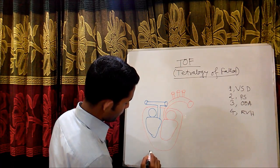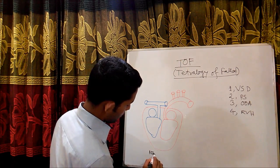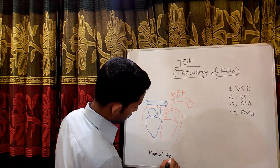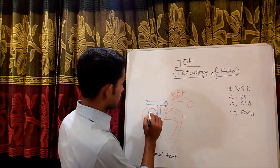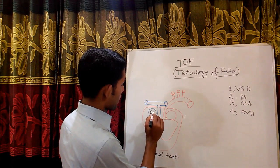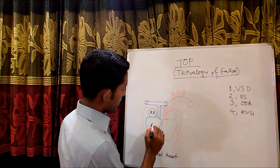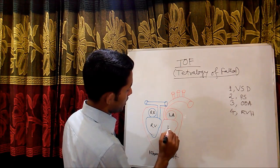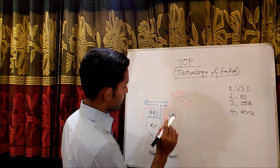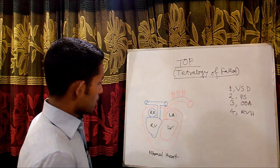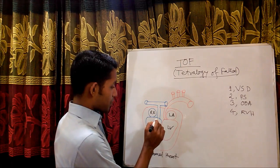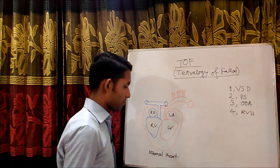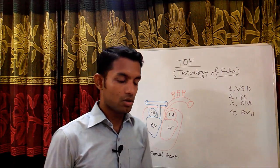This is the easy diagram of a normal heart. Here is the right atrium, right ventricle, left atrium, and left ventricle. Here is the pulmonary valve and here is the aortic valve. Now, what happens in Tetralogy of Fallot?